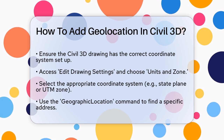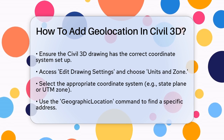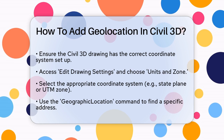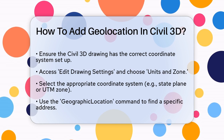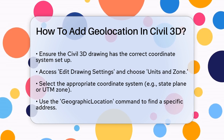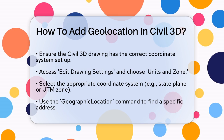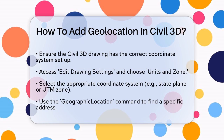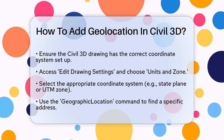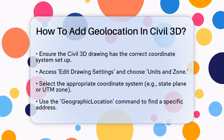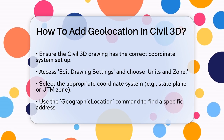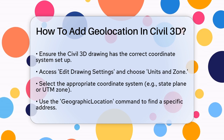First, you need to ensure your Civil 3D drawing is set up with the correct coordinate system. This is crucial because geolocation relies on accurate spatial data. Go to Edit Drawing Settings and select the Units and Zone option. Here, choose the appropriate coordinate system for your project, such as the state plane or UTM zone relevant to your location.